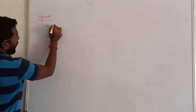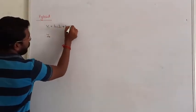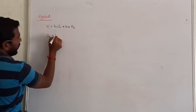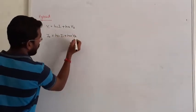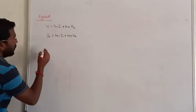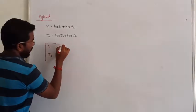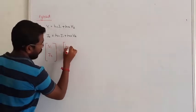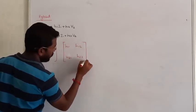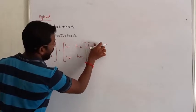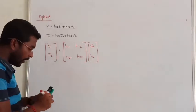The hybrid parameter equations are: V1 = H11·I1 + H12·V2, and I2 = H21·I1 + H22·V2. In matrix form, this is written as [V1, I2] = [H11, H12; H21, H22] · [I1, V2]. The input vector contains I1 and V2.